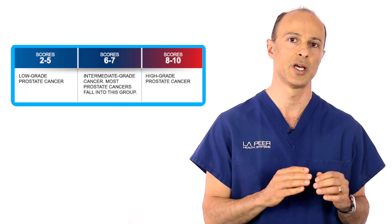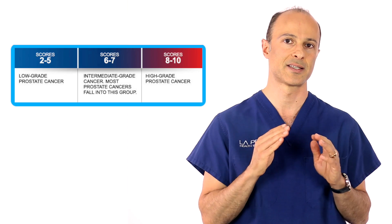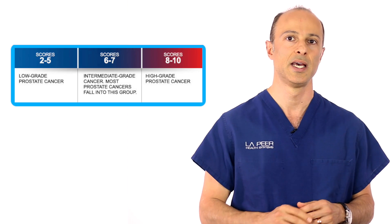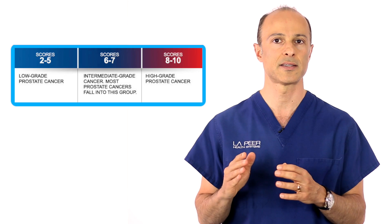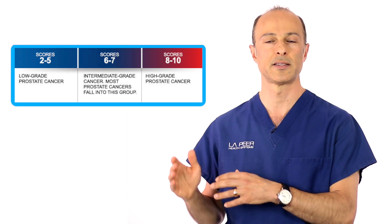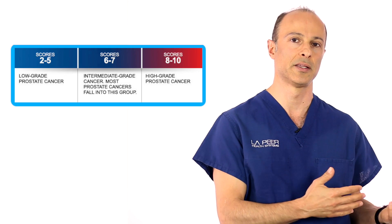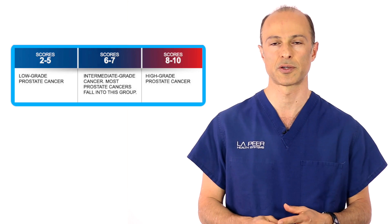The natural biology of the cancers is typically associated with the Gleason score. A Gleason 7 will behave more aggressively than a Gleason 6, and Gleason 8, 9, and 10 will also behave more aggressively than the lower Gleason grades.